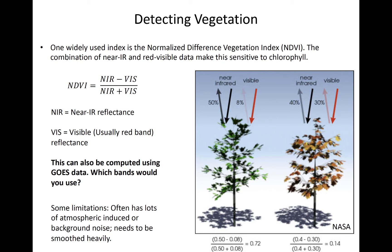This fact can be used to compare reflectances in the visible and near-IR wavelengths to deduce vegetation on the surface. One such index is called the Normalized Difference Vegetation Index, or NDVI. It is simply the quotient of the difference between near-IR and red reflectances and the sum of the two. Green forest would reflect lots of near-IR but make the visible reflectance small because leaves absorb red light for photosynthesis but not near-IR. Thus, the numerator would be large in such regions.